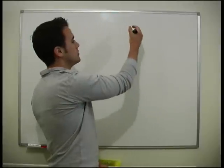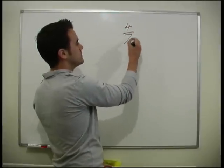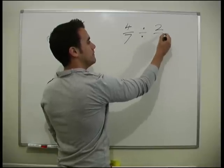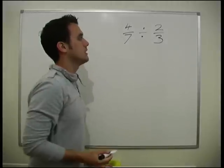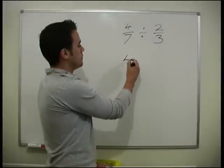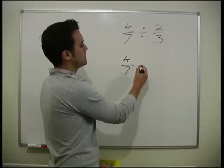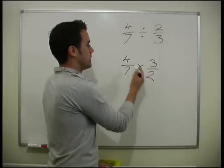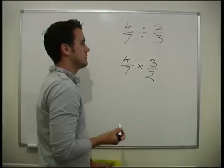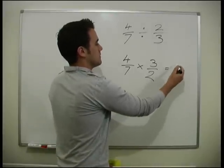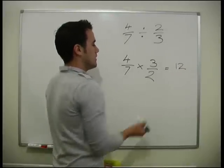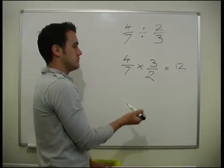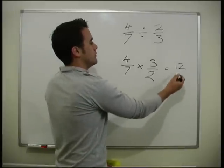Okay, let's do 4 over 7. Divided by 2 over 3. Okay, so we flip one of them. So we do 4 over 7 times 3 over 2. So we need 4 times 3. Which is 12. 7 times 2. Which is 14.